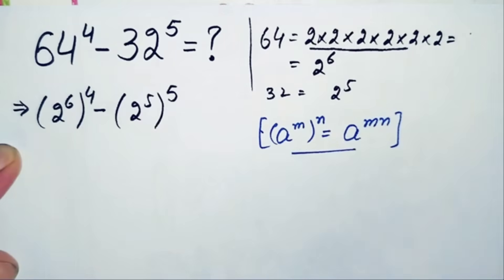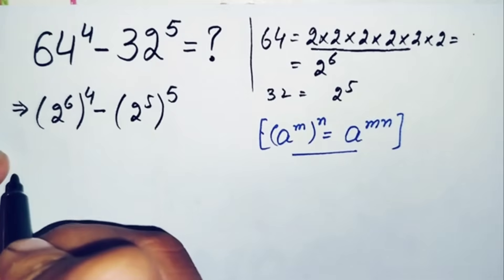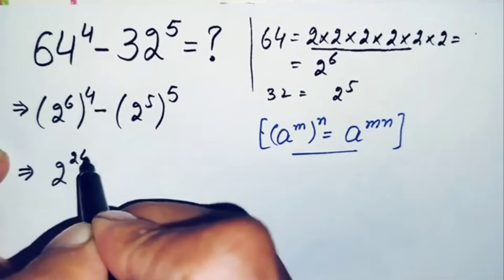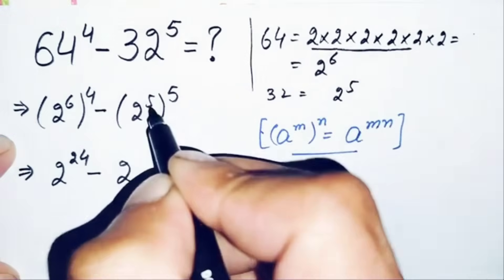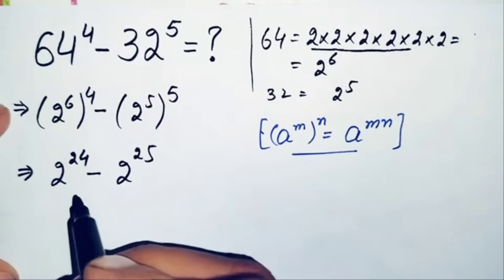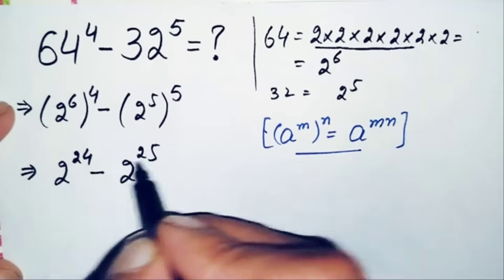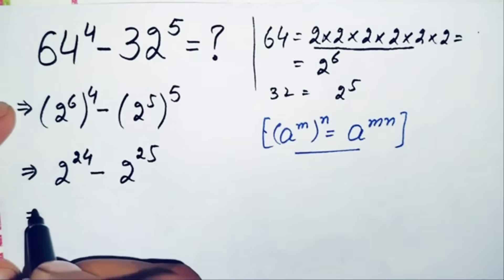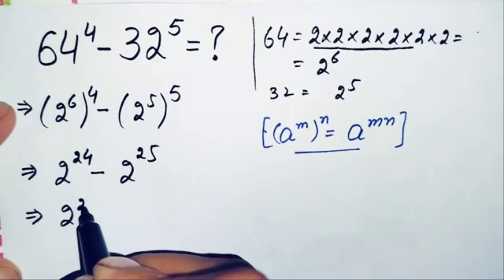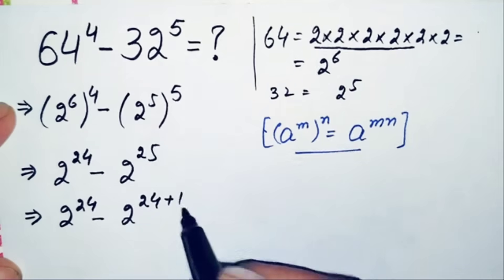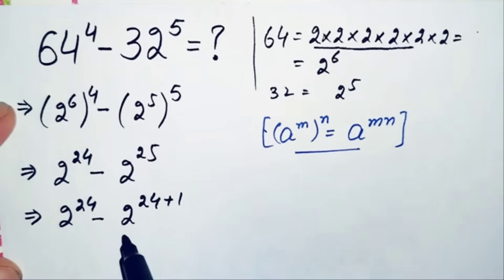Using this exponential property, we multiply the powers: 6 times 4 is 24, and 5 times 5 is 25. So the equation becomes 2^24 minus 2^25. Next, we try to make the powers the same by rewriting 25 as the sum of 24 plus 1, giving us 2^24 minus 2^(24+1).